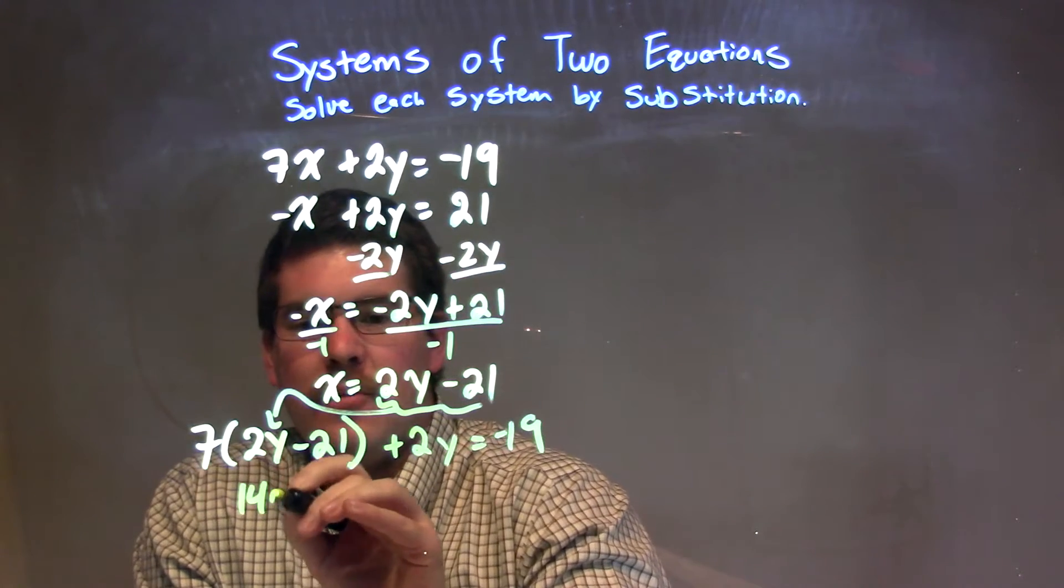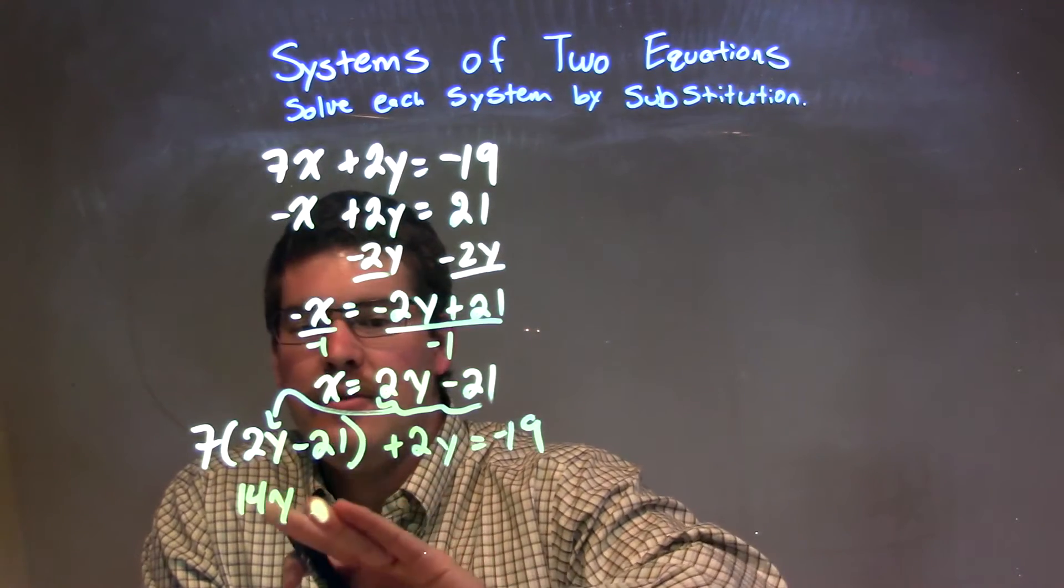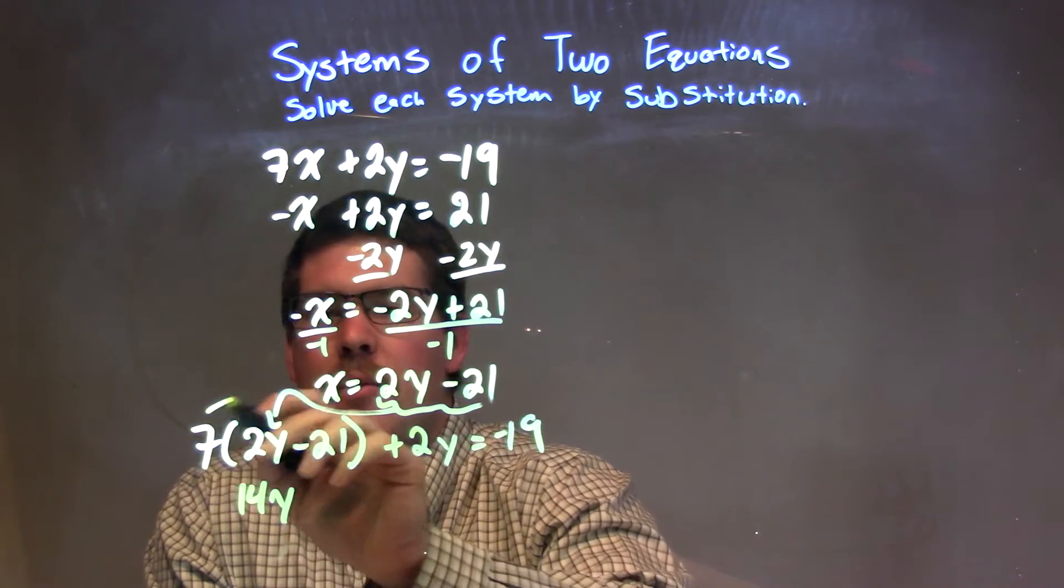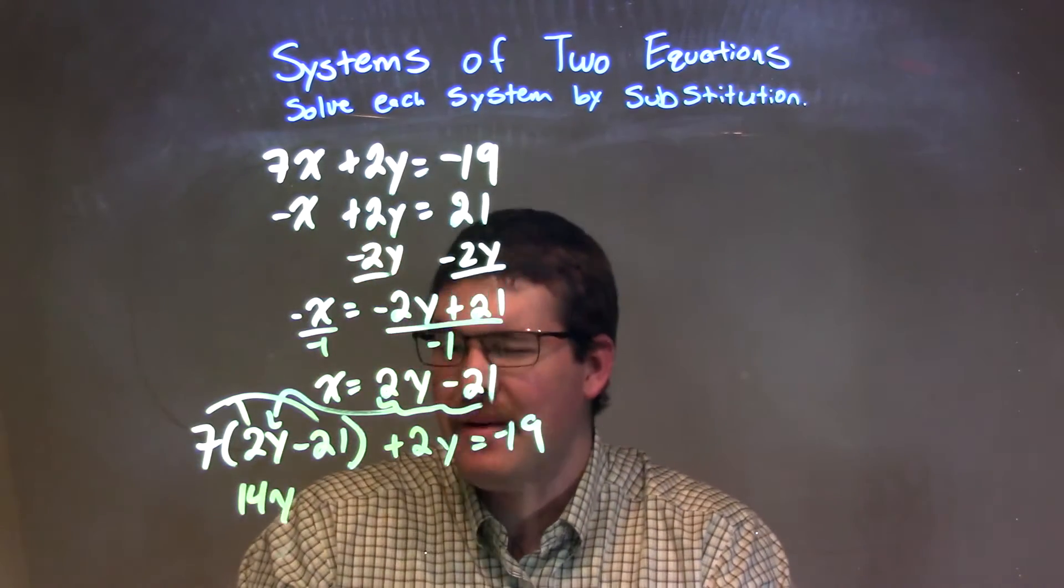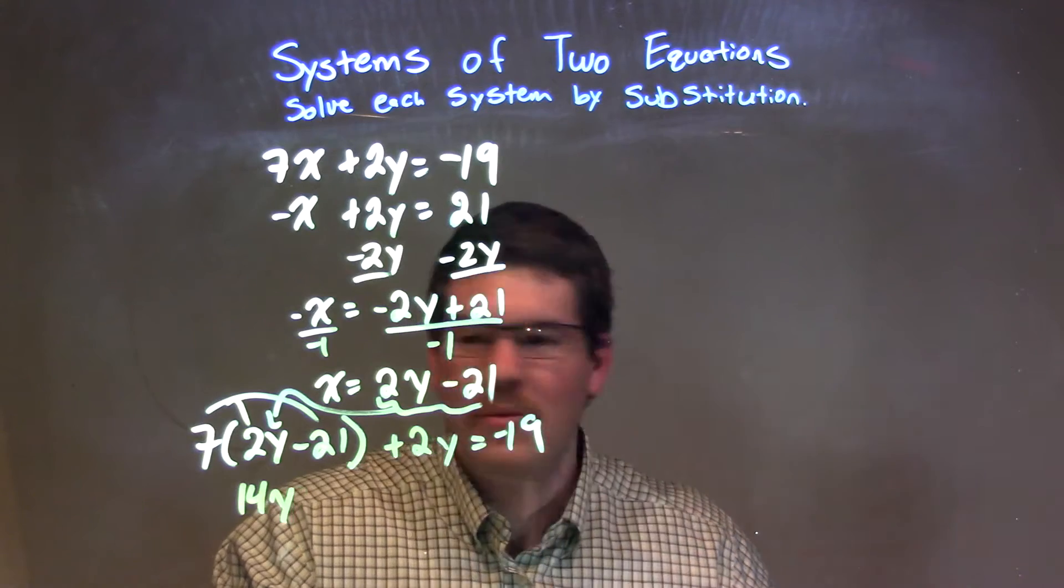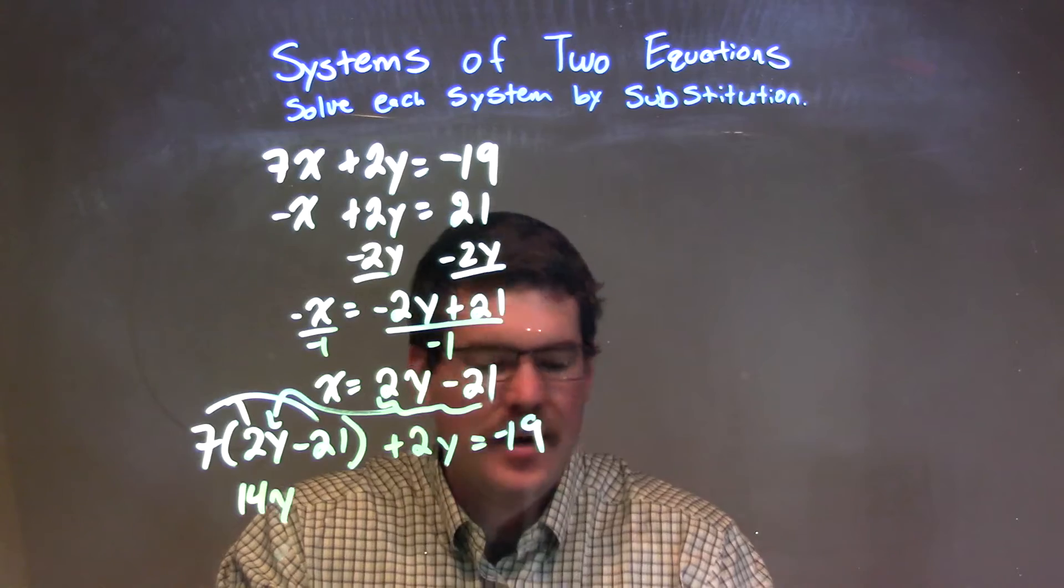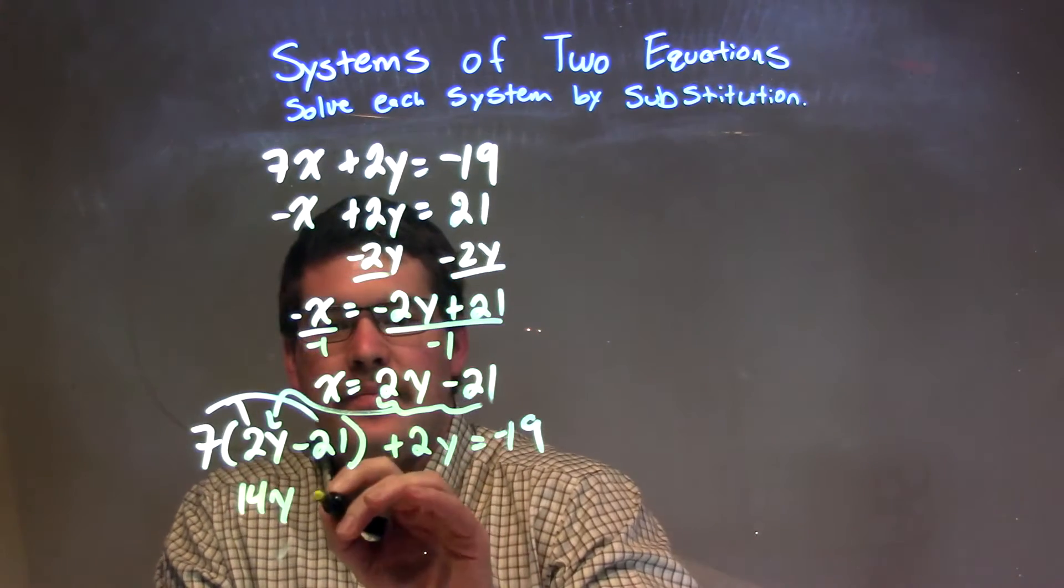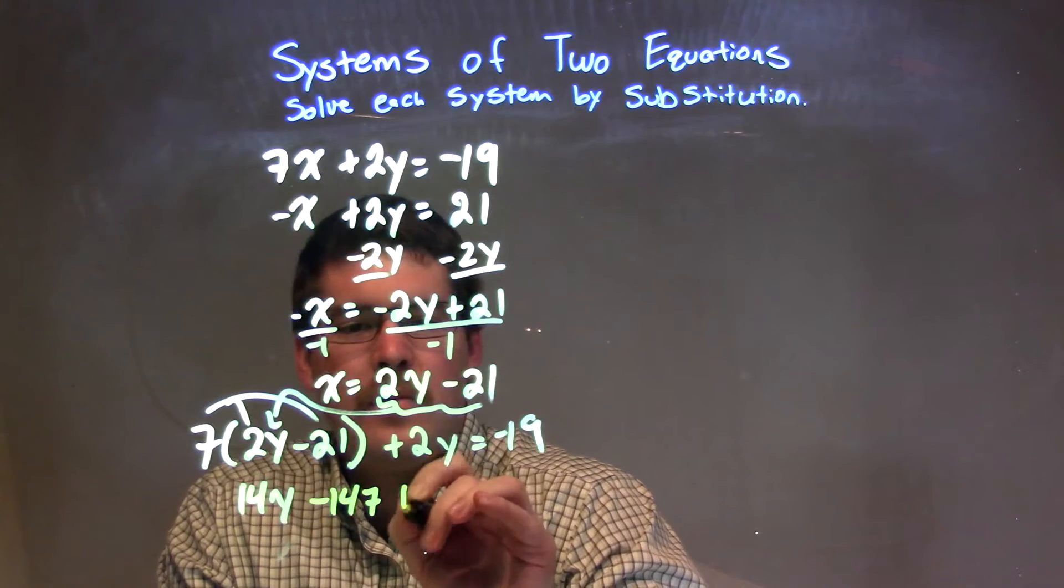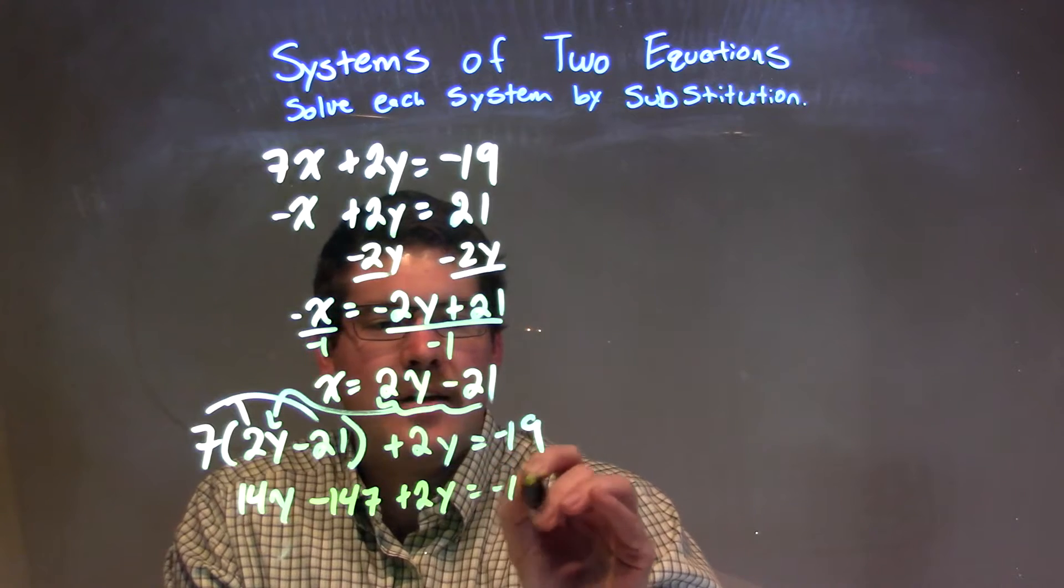7 times 2y is 14y, and it's not equal to, subtracting there. And then when we distribute the 7 again to the minus 21, oh, what is that, 147, negative 147. 7 times 21, I get negative 147 plus 2y equals negative 19.